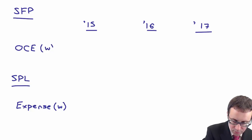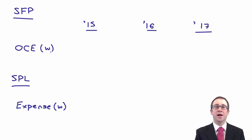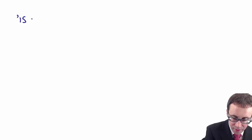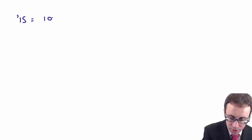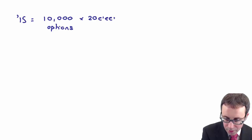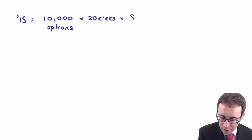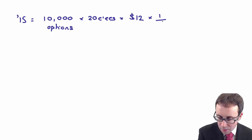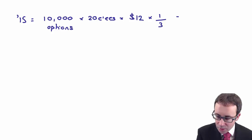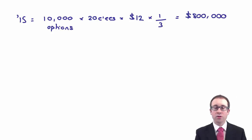Looking at year one — 2015 — we need to calculate the fair value to recognise at the end of the first of the three years. We had 10,000 options granted to each of the 20 employees, the fair value at the grant date was $12, and we are at the end of the first year of a three-year vesting period. Tapping that into your calculator, you get $800,000.